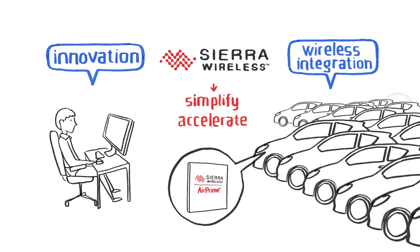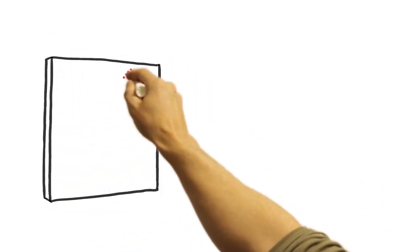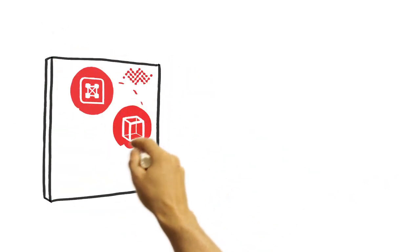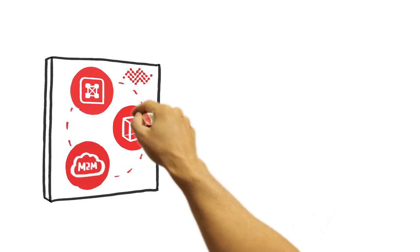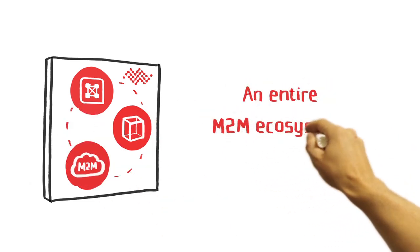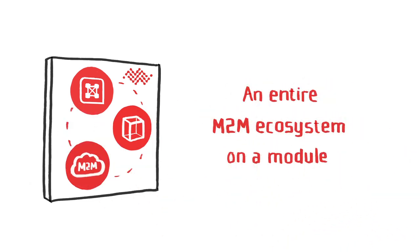Next-generation AirPrime embedded modules are the first in the world to combine a powerful multi-core processor, an open application framework, and secure cloud services to offer an entire M2M ecosystem on a module.